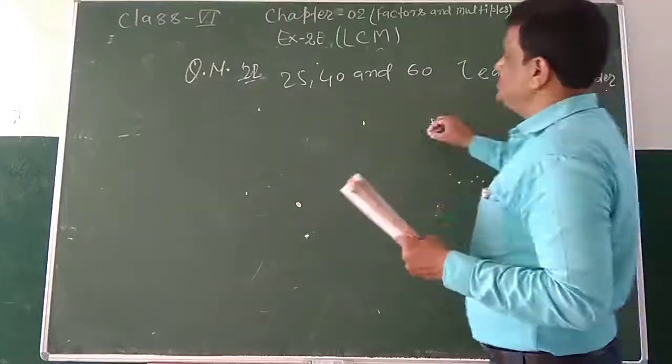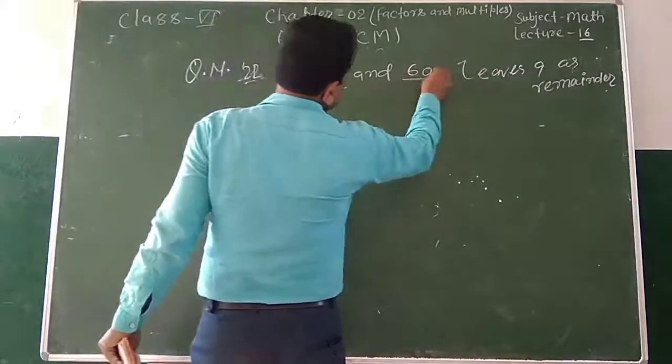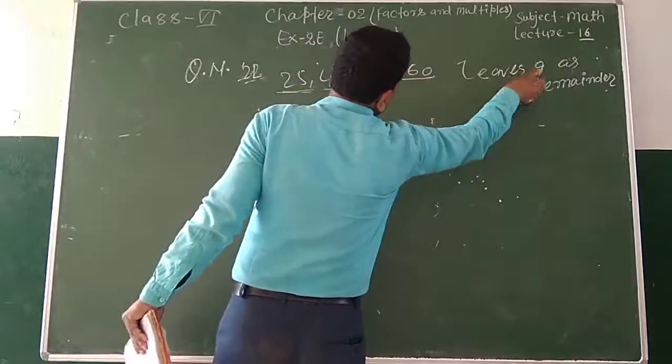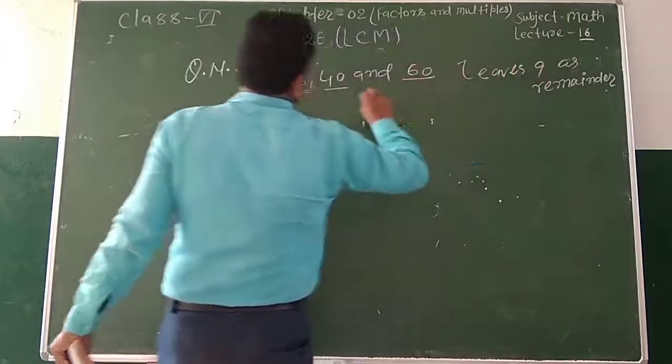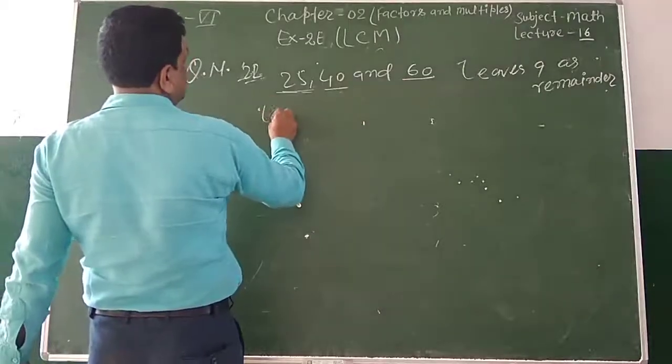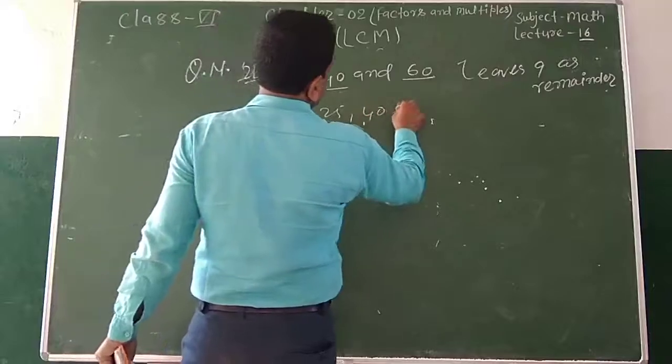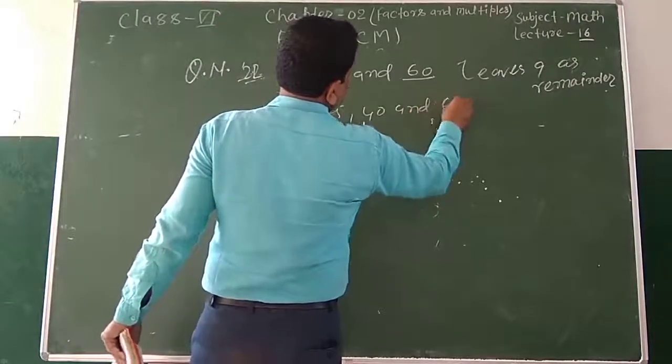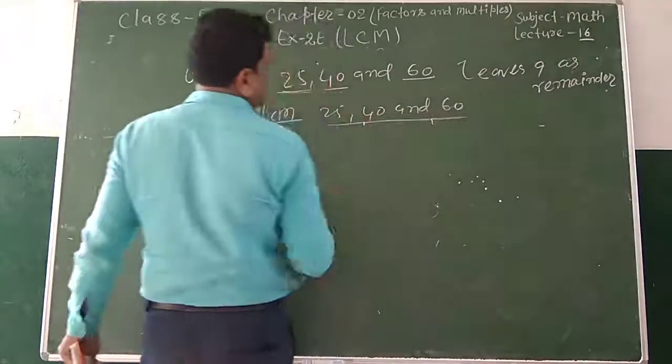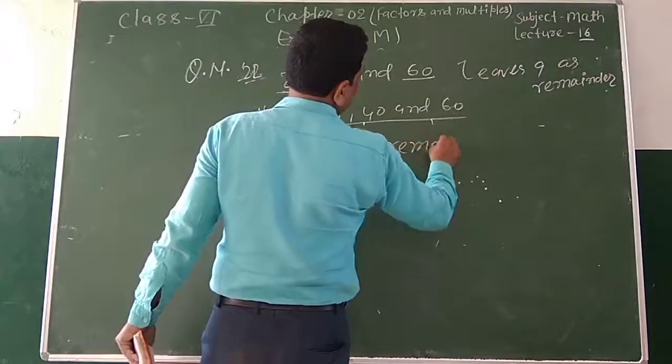We need to add 9 remainder. We need to add 25, 40 and 60, 9 remainder. The answer is the question in the process. We need to add 25, 40 and 60. If we add 25, 40 and 60, we need to send the answer to our next class.